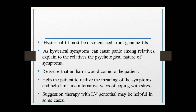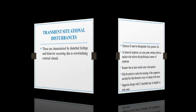Relatives and family members are in psychological trauma at that time and don't know the nature of the symptoms. So we have to counsel them, describe the nature of the disease, and reassure them that there is no harm to the client. The patient should be helped to realize the symptoms and how to cope. If symptoms persist, we can go for IV pentothal, which is helpful in many cases.